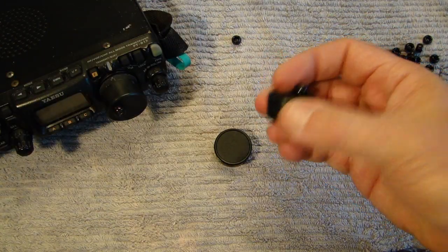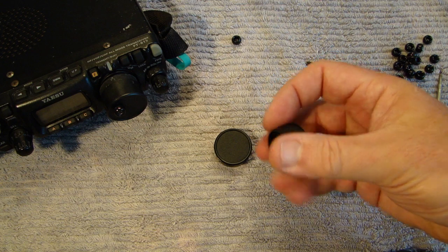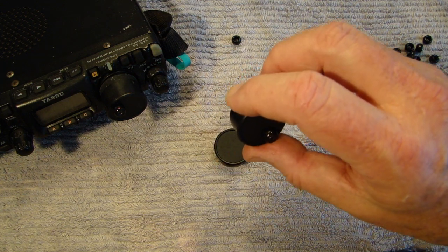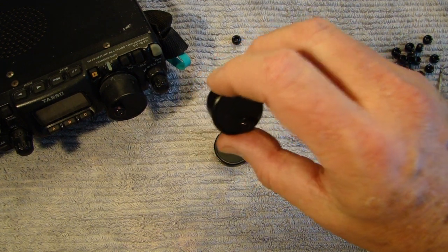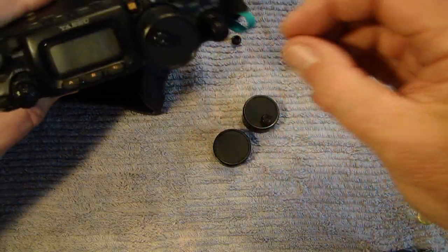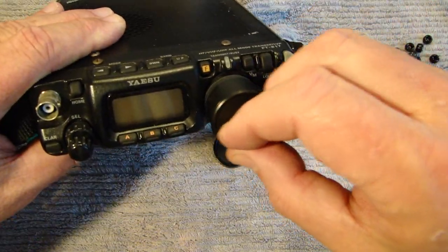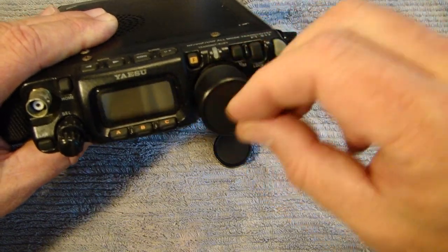It's ready to use. The only thing to do is to put it here and press it over the original tuning knob from the FT817. Here we have it, and it's very easy to use. You have the movement.